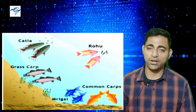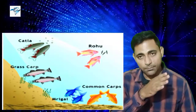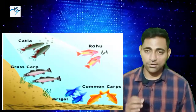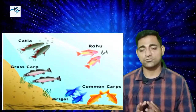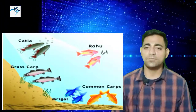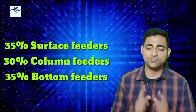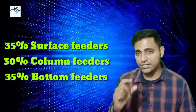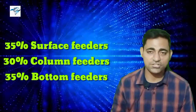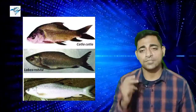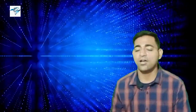Grass carp prefers vegetation or aquatic plants. Bottom feeders take feed from the extreme bottom of the pond. In IMC culture the bottom feeder is mrigal, and you can also stock Amur common carp or normal common carp as bottom feeders. The recommended ratio is: 35% surface feeders, 30% column feeders, and 35% bottom feeders. So if you stock 100 fish, 35 should be katla, 30 should be rohu, and 35 should be mrigal and common carp.